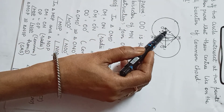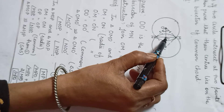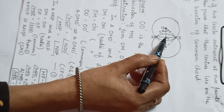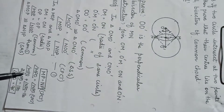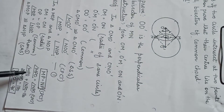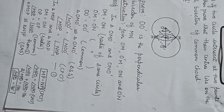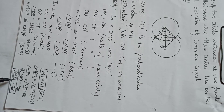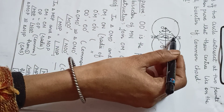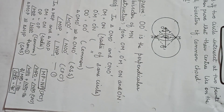By SAS, triangle MOP and NOP are congruent. Since MOP is congruent to NOP, MP equals NP by CPCT, and angle MPO equals angle NPO by CPCT. The sum of these 2 angles is 180 degrees as a linear pair, so twice of angle MPO equals 180 degrees, giving angle MPO equals 90 degrees. Since MP equals NP and angle MPO equals 90 degrees, OO' is the perpendicular bisector of MN.